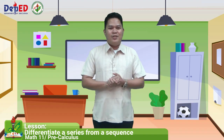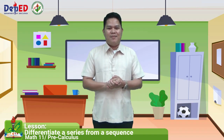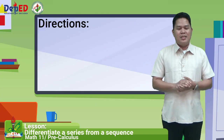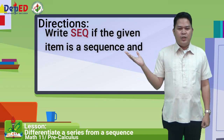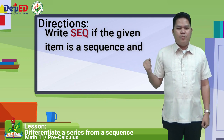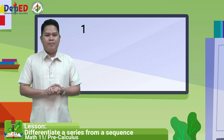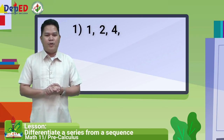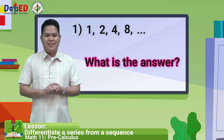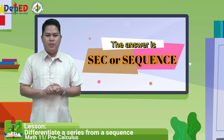Now, it is your turn to do guided practice activity. Directions: write SEQ if the given item is a sequence, and write SER if it is a series. Number one, the given is 1, 2, 4, 8, followed by three dots. The answer is SEQ or sequence.